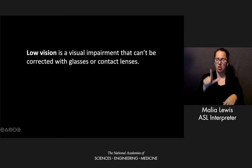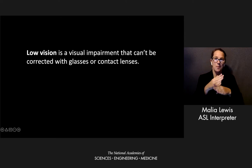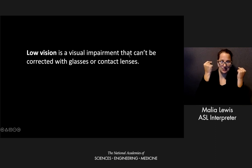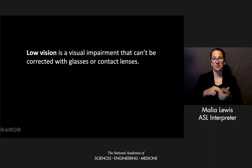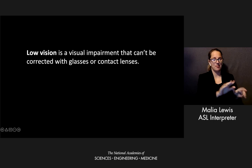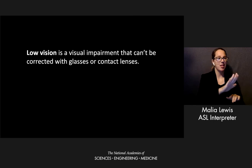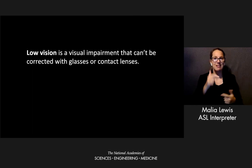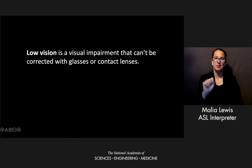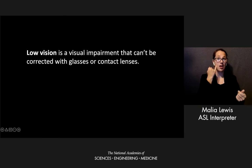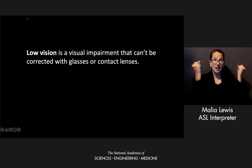Low vision is a visual impairment that can't be corrected with glasses or contact lenses. So it does affect someone's ability to live life, to perform daily activities and tasks, but it can't be fully corrected. So if you're nearsighted and you wear glasses, then you don't have low vision.